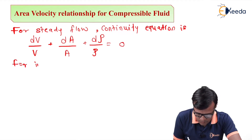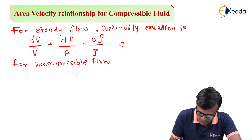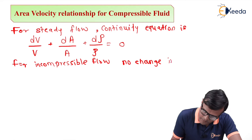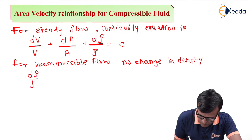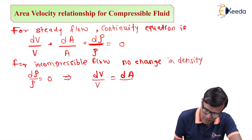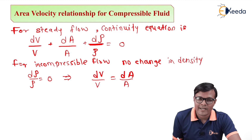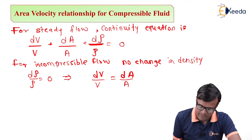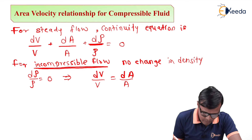For incompressible flow, there is no change in density, so dρ becomes zero and dρ/ρ = 0, which gives us dV/V = dA/A. In terms of sign convention: if velocity increases, area reduces, and if area increases, velocity reduces. This relationship is valid for incompressible flow.